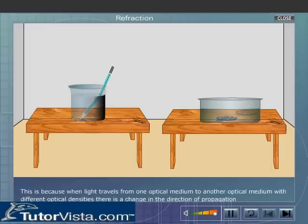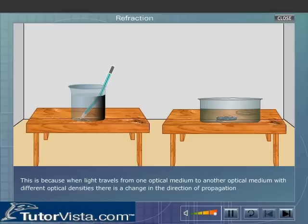Why does this happen? This is because when light travels from one optical medium to another optical medium with different optical densities, there is a change in the direction of propagation.